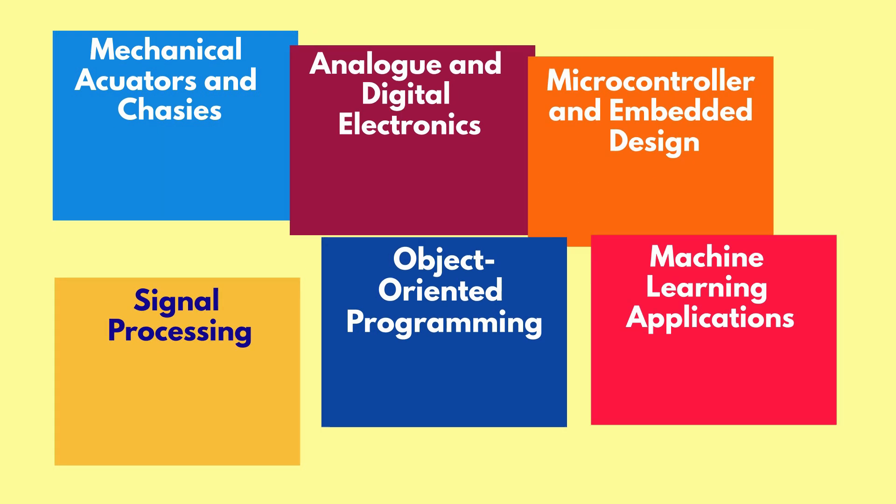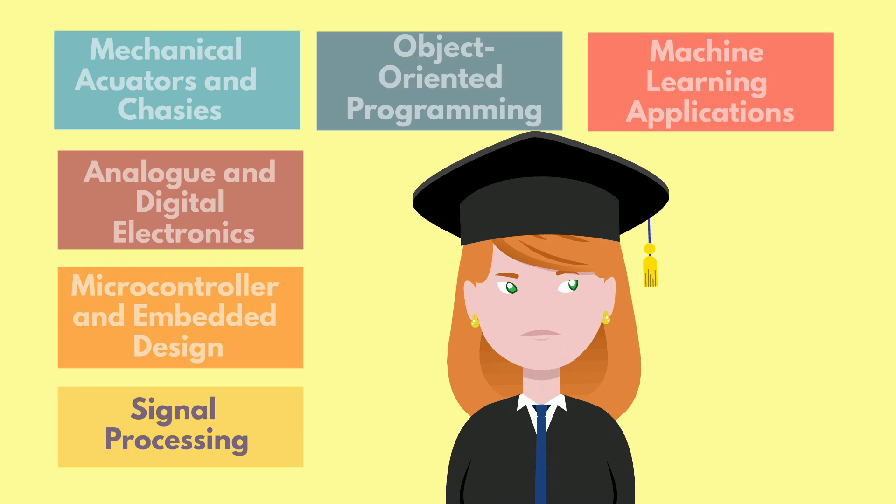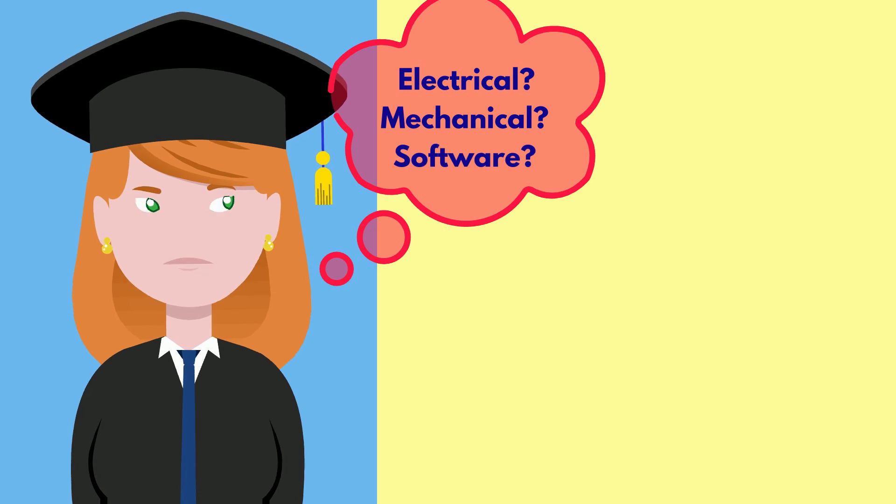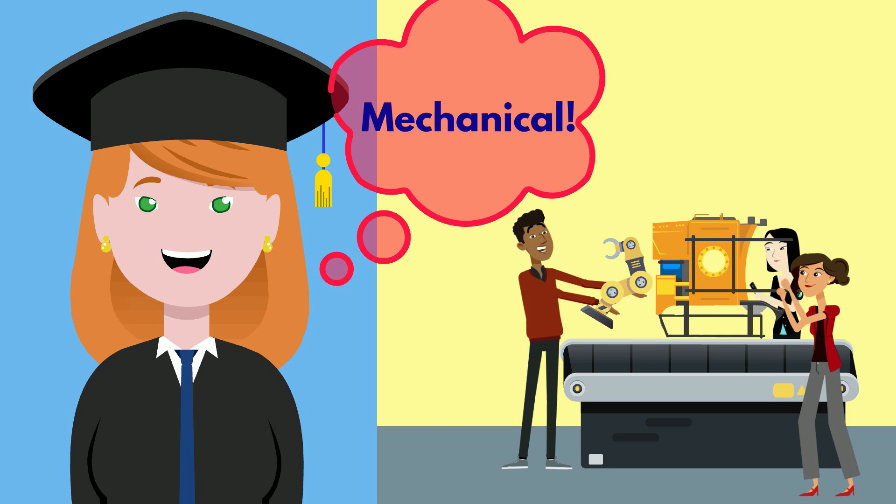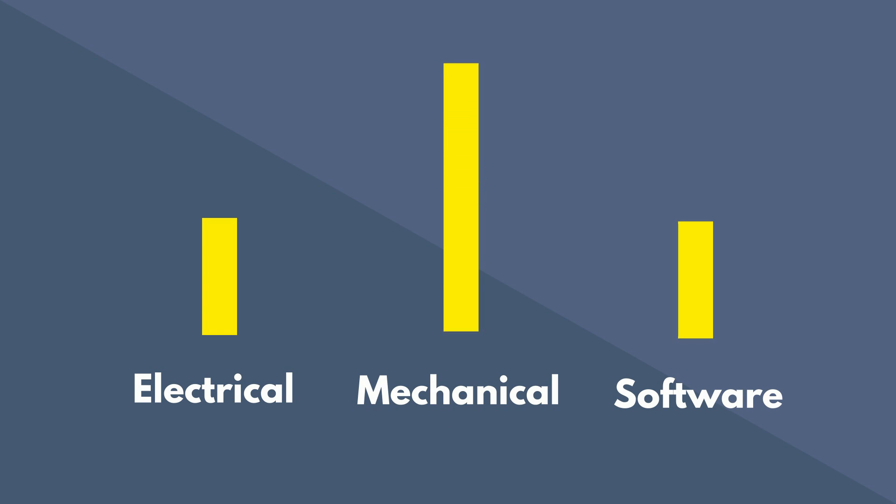But rarely, if ever, does someone walk out of a degree ready to use every one of these technologies in the field. More typically, engineers specialize in one of these skill sets, like becoming a mechanical mechatronics engineer and having varying levels of proficiency in the others. So there, you will be exposed to all three fields, but you will likely only concentrate in one field.